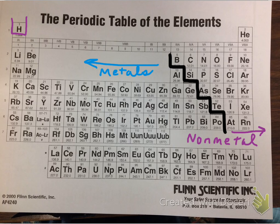The elements boron, silicon, germanium, arsenic, antimony, tellurium, and astatine are considered metalloids because they possess properties of both metals and nonmetals.